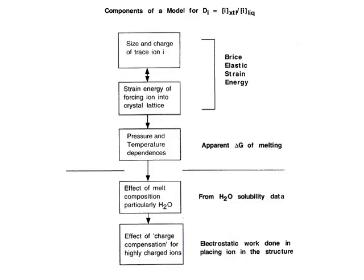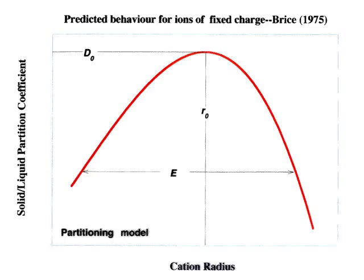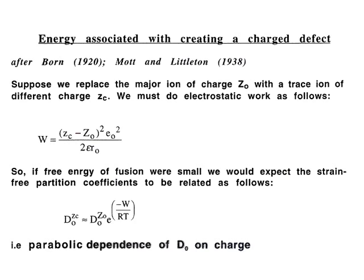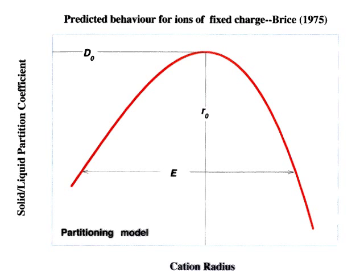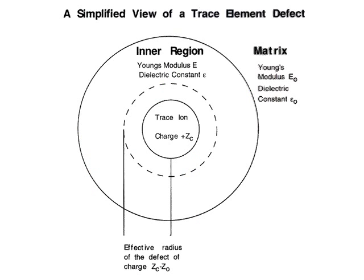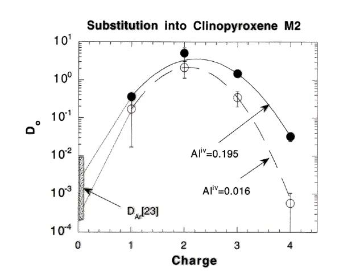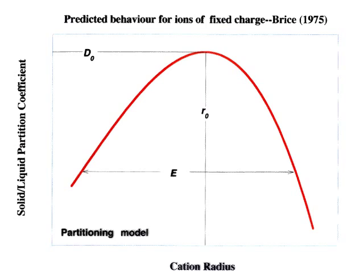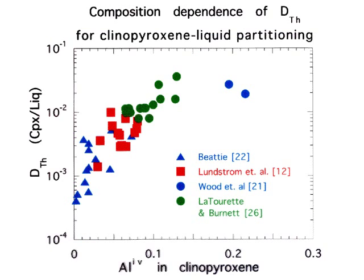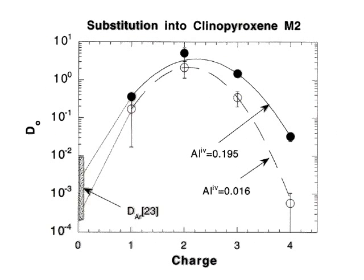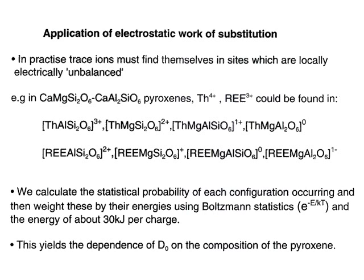We then used our anhydrous model and added this water correction to calculate partition coefficients for hydrous melts. There are always outliers — some are very old probe data where you don't really know the water content. But if you ignore those two, the scatter is no worse than the anhydrous case. I think we can make a very good quantitative correction for the effect of water on partition coefficients, even with points containing over 40% water. That's a prediction, not a fit.